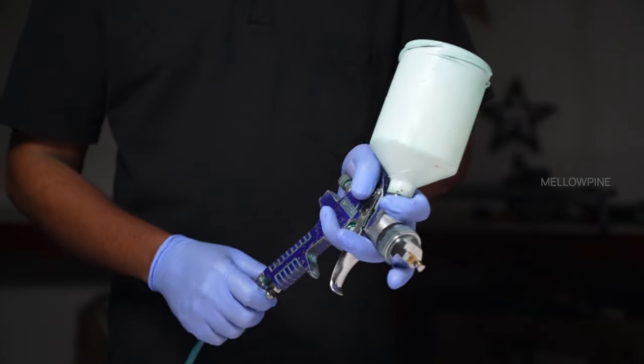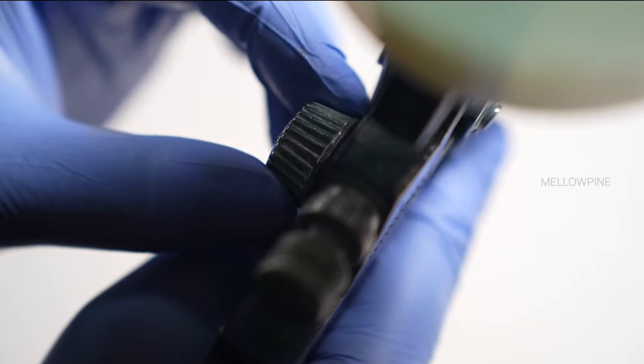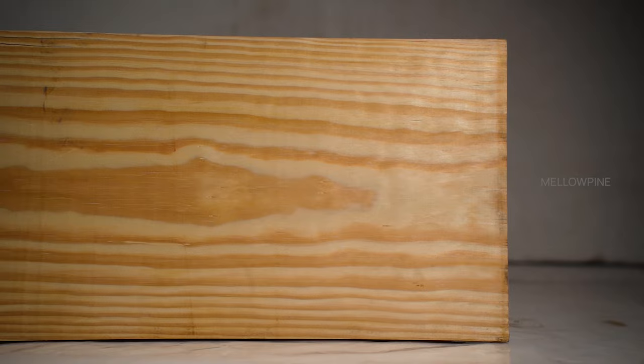Now, prepare the spray gun by filling the container with the prepared polyurethane. Adjust the spray gun settings according to the thinner consistency of the polyurethane.